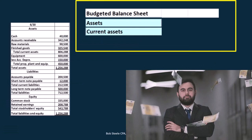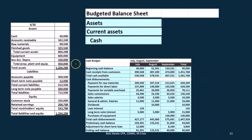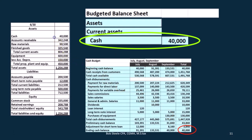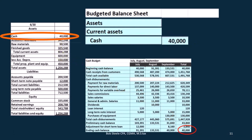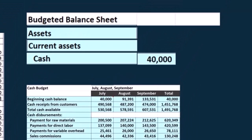The assets will start with current assets, beginning with cash. Cash will come from the cash budget — we have $40,000 there. Don't confuse that with the $40,000 at the beginning of last period's balance sheet. This is the balance sheet at the end of last period, which is of course the beginning numbers for this period. The reason it's the same is because that's our minimum balance — we needed to take out a loan to get to $40,000.